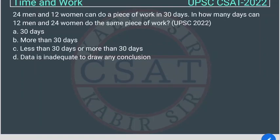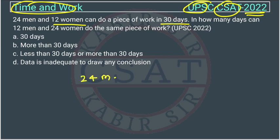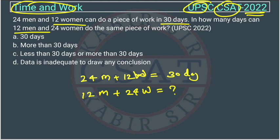This is a question of time and work asked by UPSC in CSAT paper of 2022. 24 men and 12 women can do a piece of work in 30 days. In how many days can 12 men and 24 women do the same piece of work?